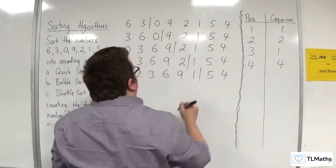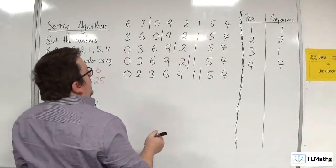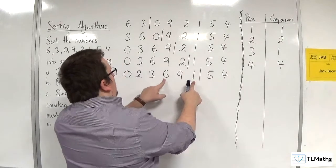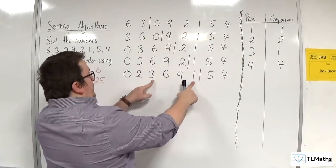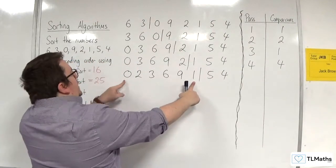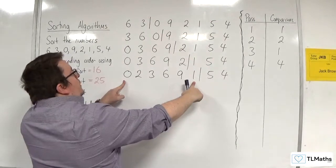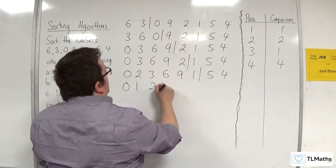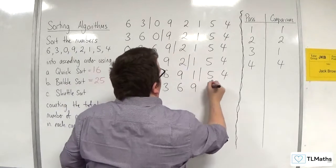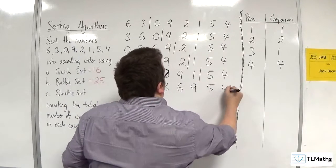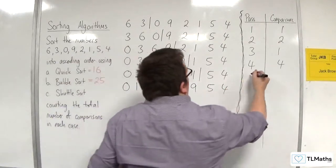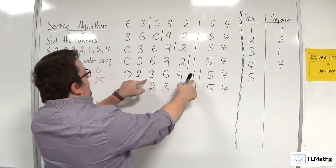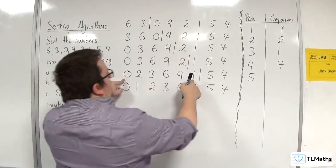Then we bring in 1. 1 gets compared with 9 and swaps, then 6 and swaps, then 3 and swaps, then 2 and swaps, then 0 — no swap. So 0, 1, 2, 3, 6, 9, 5, 4. On the fifth pass, we made 5 comparisons.